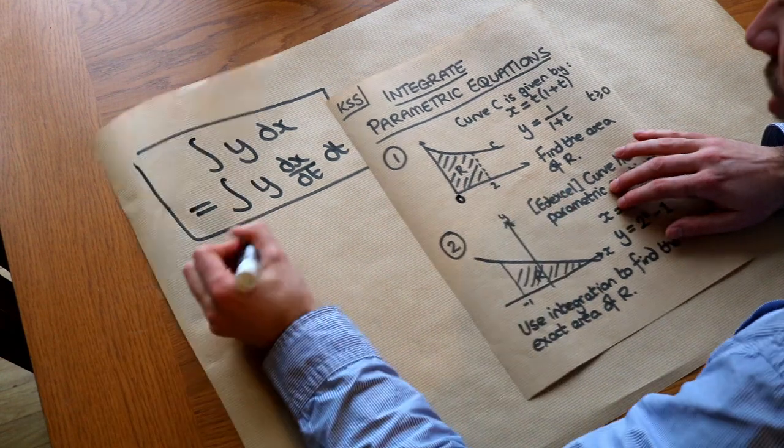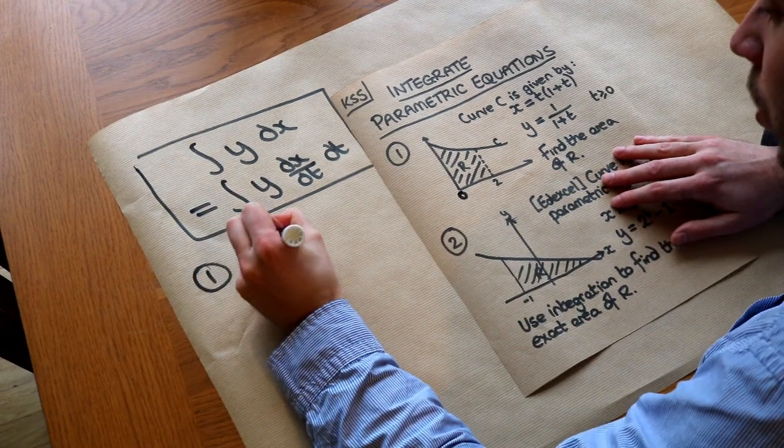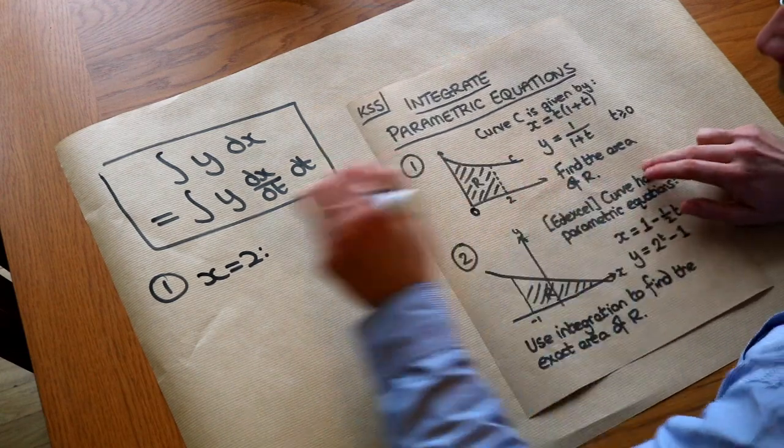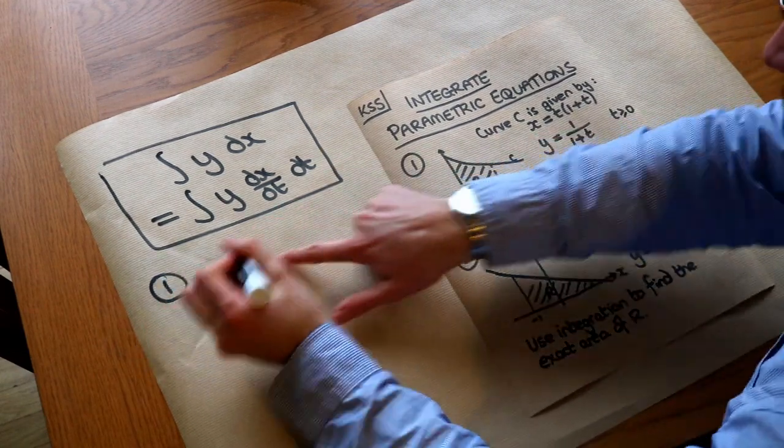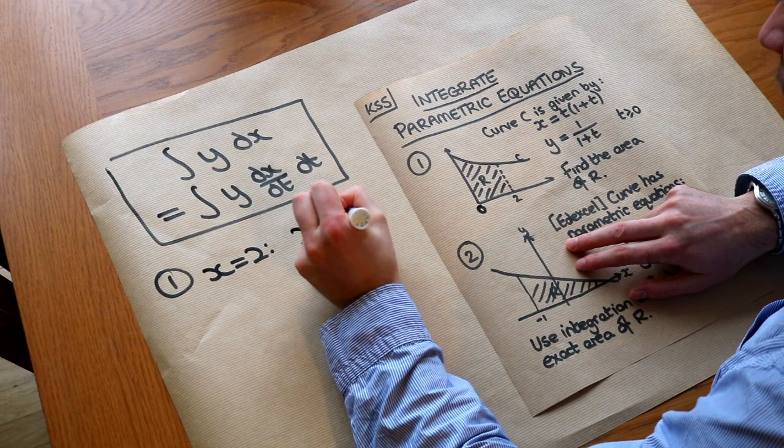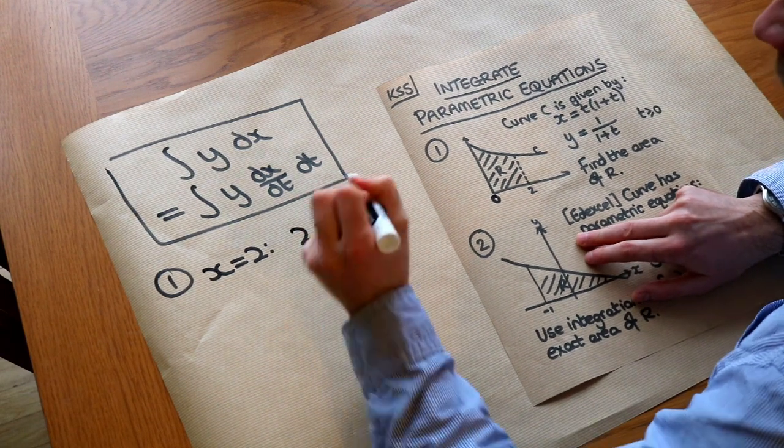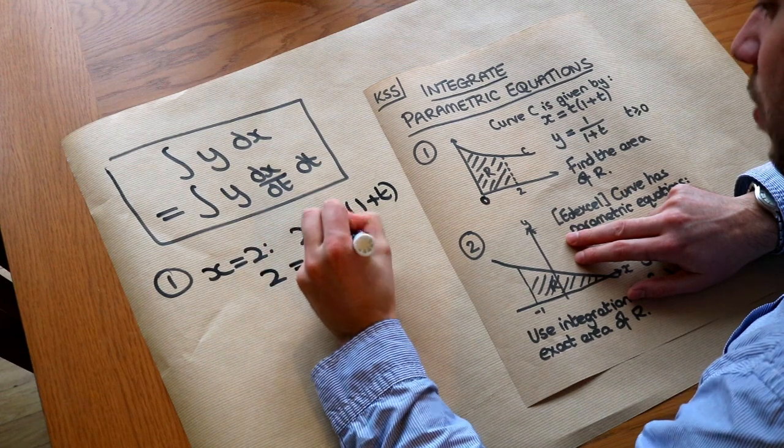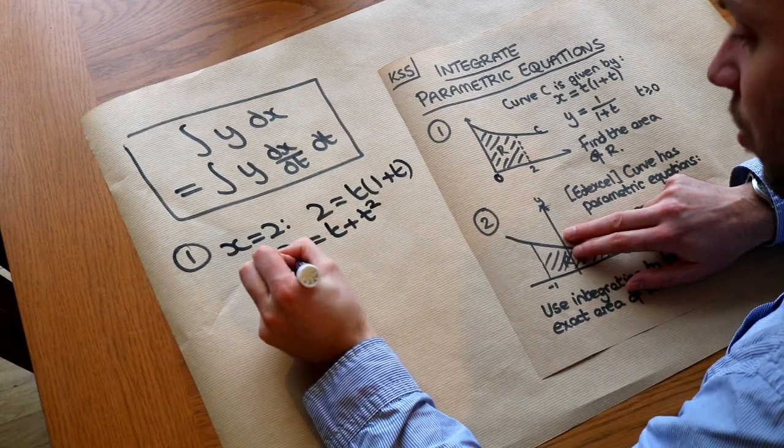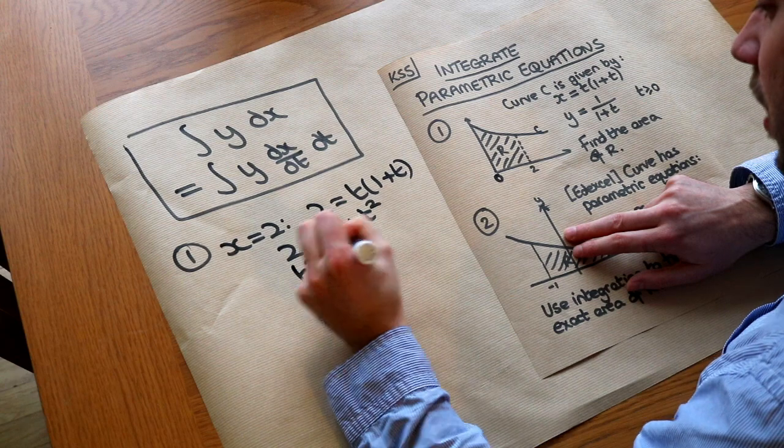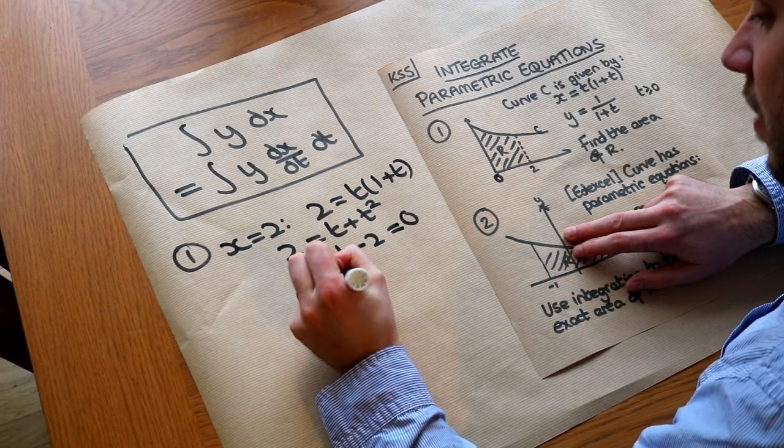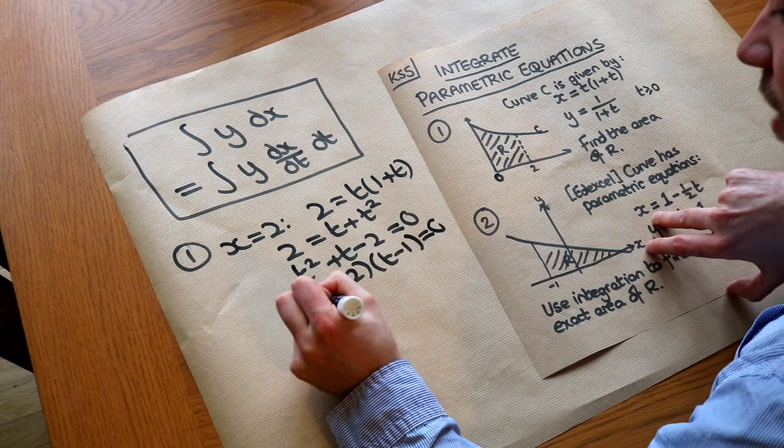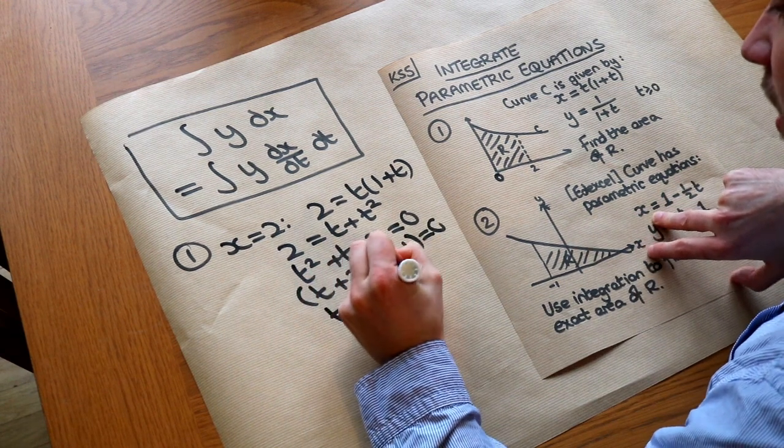So let's consider when X is 2, what would T be? Now we've got here that X is T times 1 plus T, so if X=2 is equal to T(1 plus T), if we just expand that out, we get 2 equals T plus T squared, and then this is a quadratic equation we can solve, so minus 2, that is (T plus 2)(T minus 1), so T is equal to minus 2, or T is equal to 1.